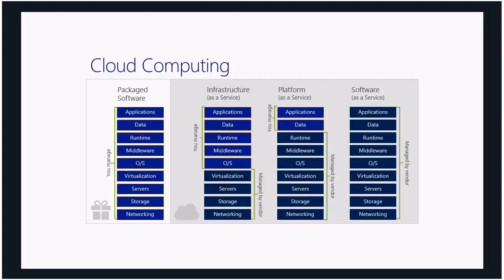Going a bit deeper: on the left, we see traditional packaged software where you maintain the complete stack — networking, storage, servers, virtualization, all the way up to the application. Once we move computing requirements into something like Azure, Microsoft manages the virtualization, servers, and storage for us. That leaves us, if we want infrastructure as a service, simply managing the OS and up to the application. You can run your own virtual machine, make it available to clients, connect to on-premise equipment using site-to-site VPNs — but you still have to patch the operating system and applications. Very much like a Hyper-V environment on-premise.